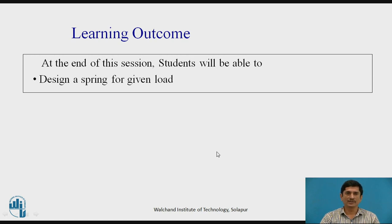The learning outcome of this session is, at the end of this session, the student will be able to design a spring for a given load. We know that the spring can be designed for various types of loadings: direct load, a given range of load, and energy type problems. In this session, we will be only concentrating on design of a spring for a given load.